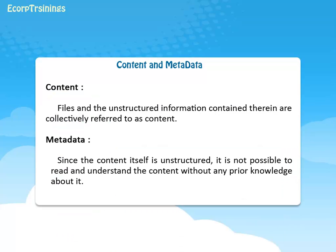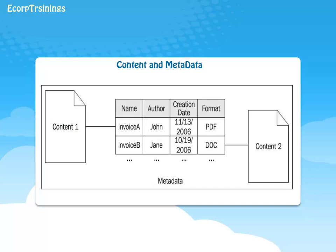In Documentum, content and metadata are main concepts. Coming to content, files and the unstructured information contained therein are collectively referred to as content. Since the content itself is unstructured, it is not possible to read and understand the content without any prior knowledge about it. Therefore, some structured data is attached to each content item which describes the content item. This data that provides information about the attached content item is called metadata.